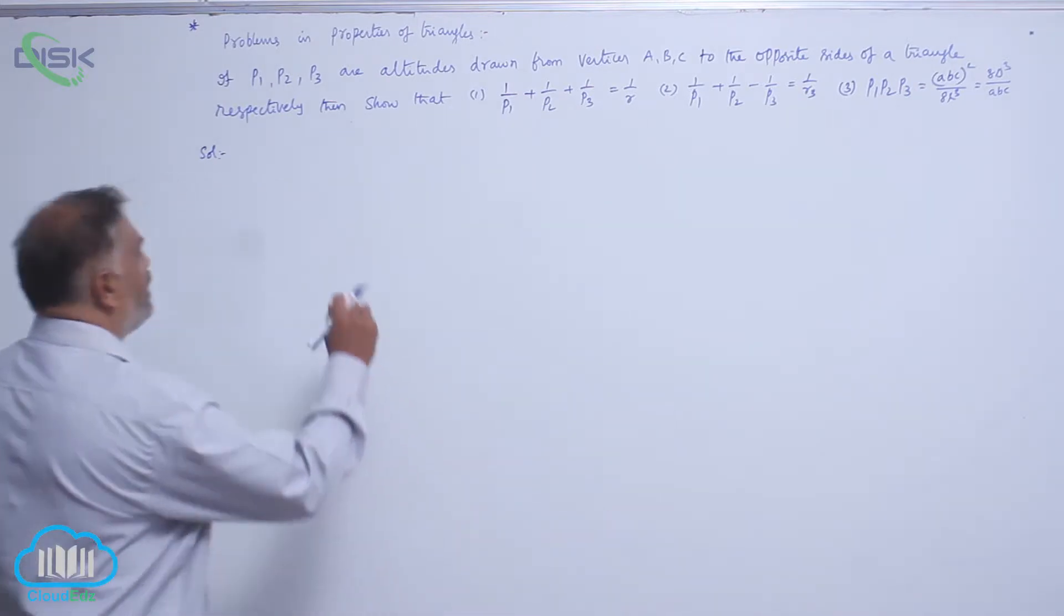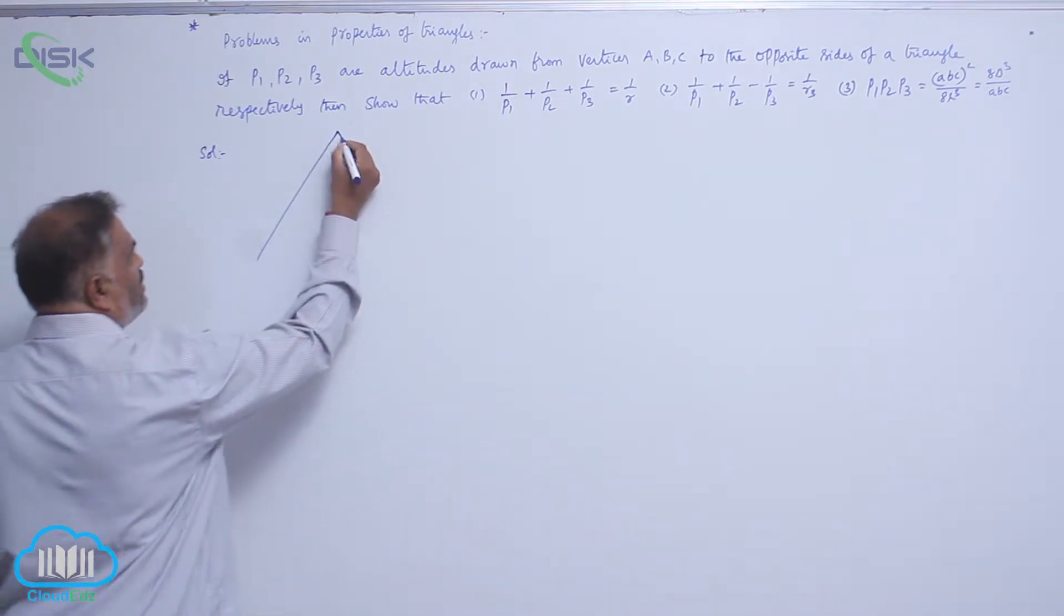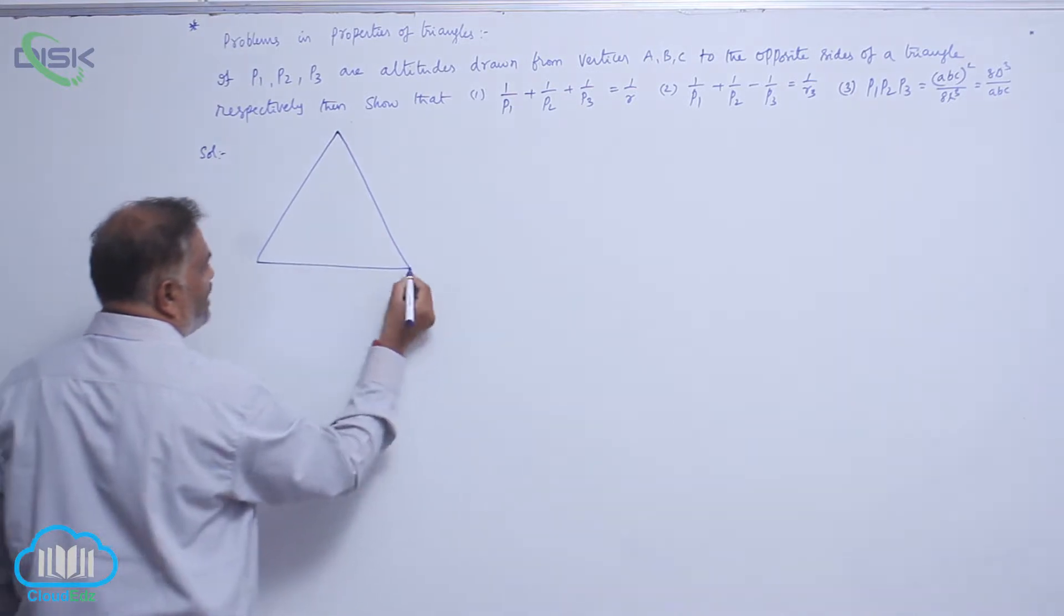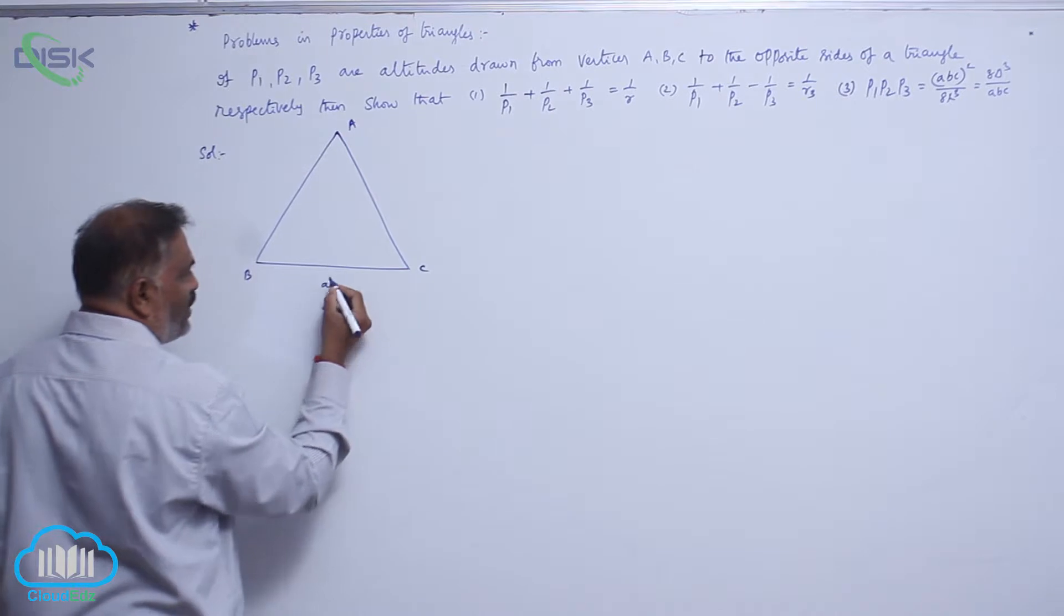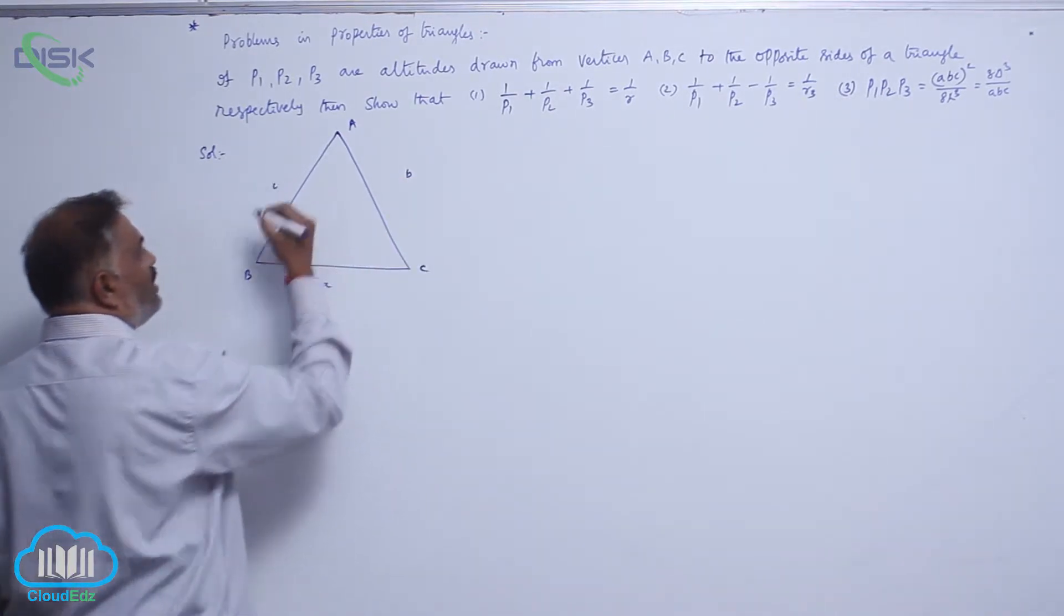Let us draw the diagram here. This is triangle ABC: A here, B here, C. As usual, small a, b, c denote the respective sides.